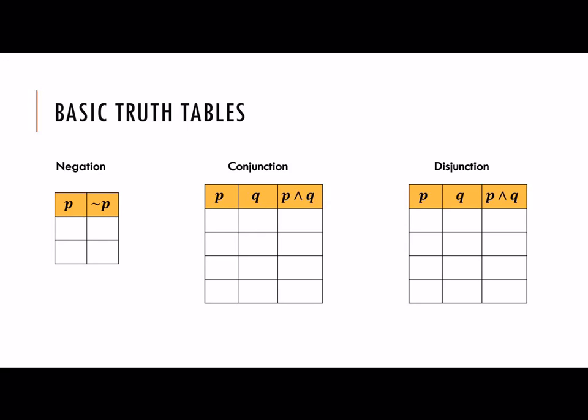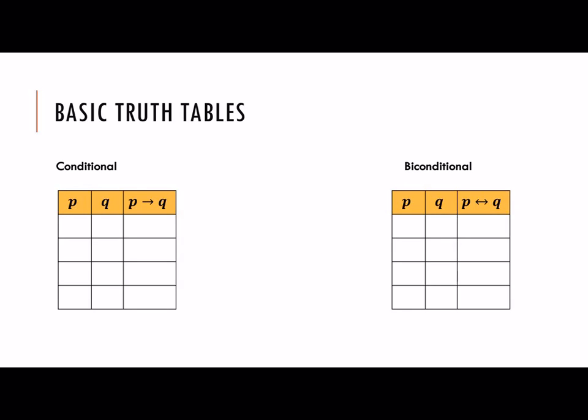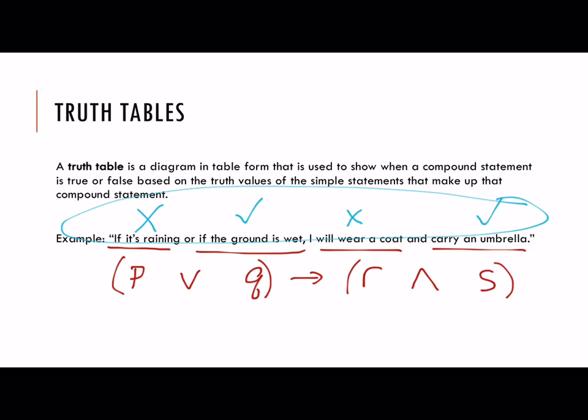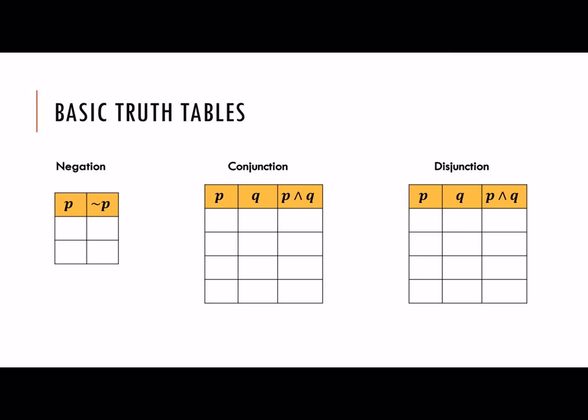Let's start out with some basic truth tables. There is a chart in your textbook that summarizes these. We need to know all of the different options — true or false — for negations, conjunctions, disjunctions, conditionals, and biconditionals. From there, we're going to use those basic truth tables to construct ones for more complicated statements like the first example. These five are always the same and universally known, whereas a statement like that first one I made up you might not encounter as often.